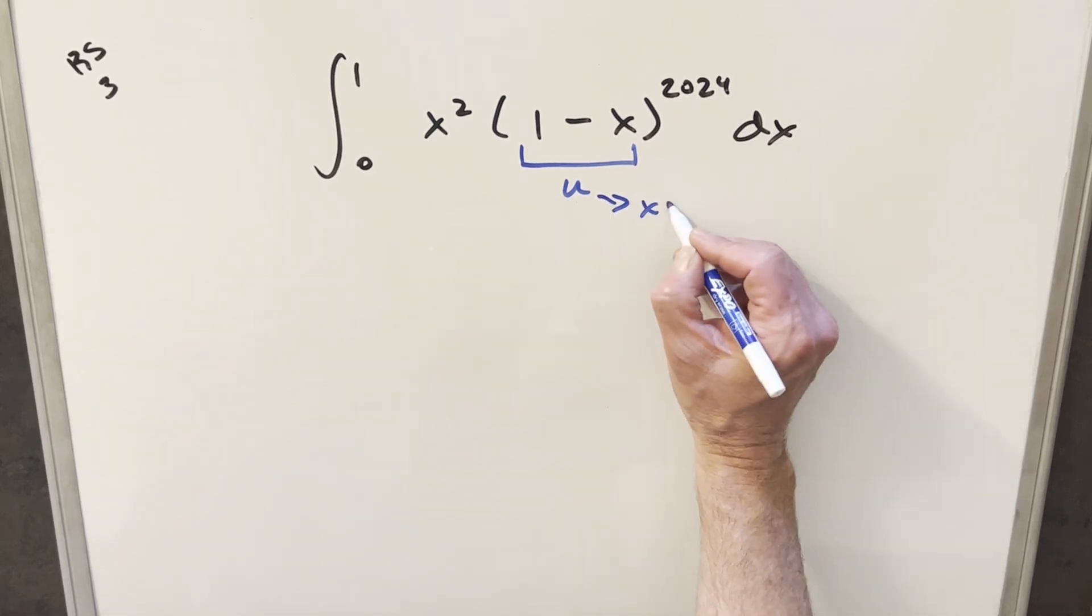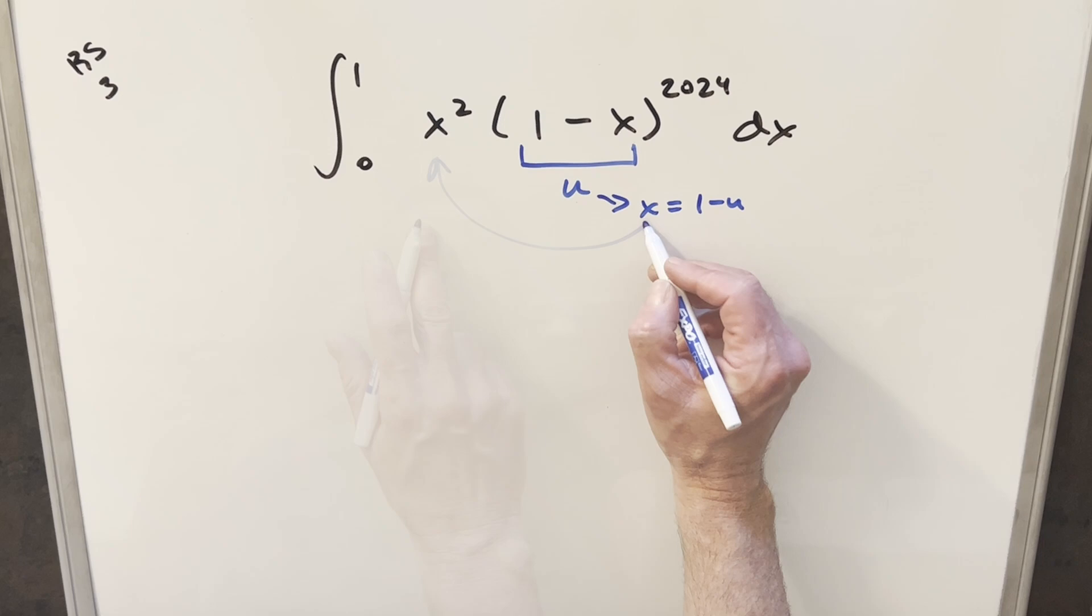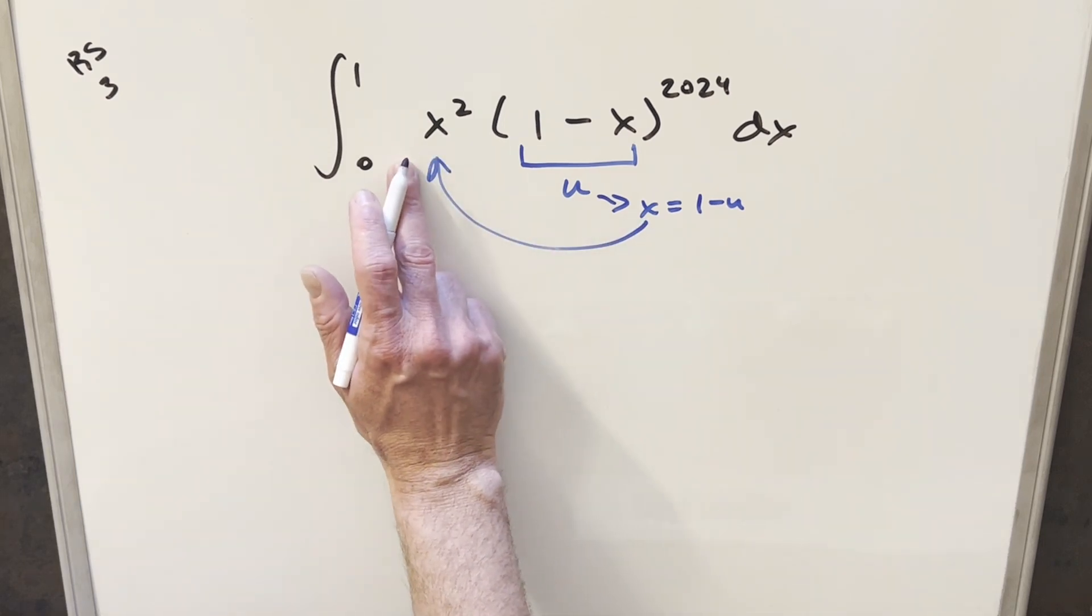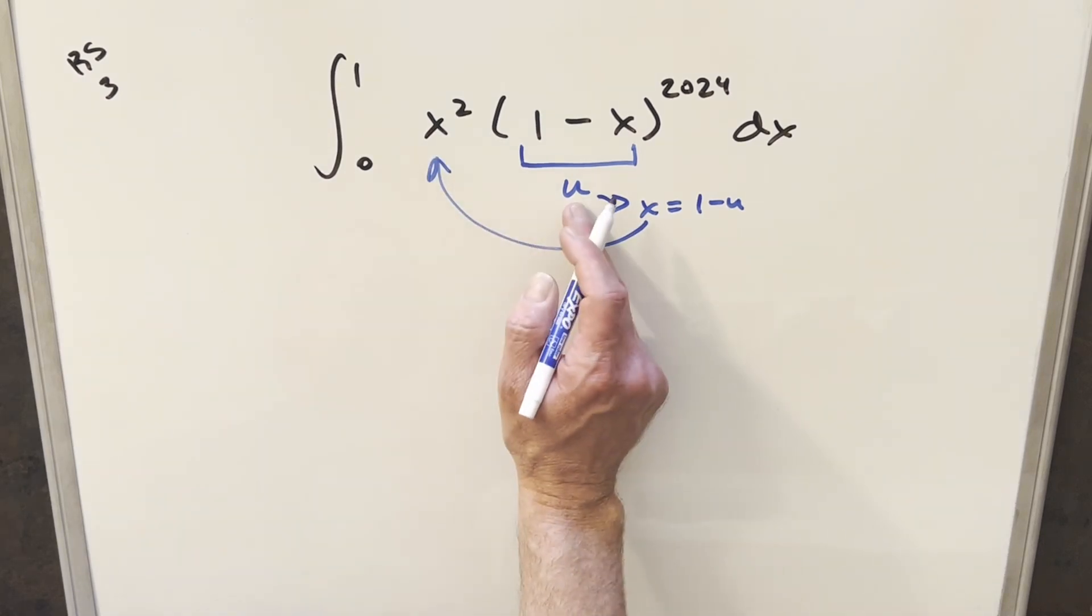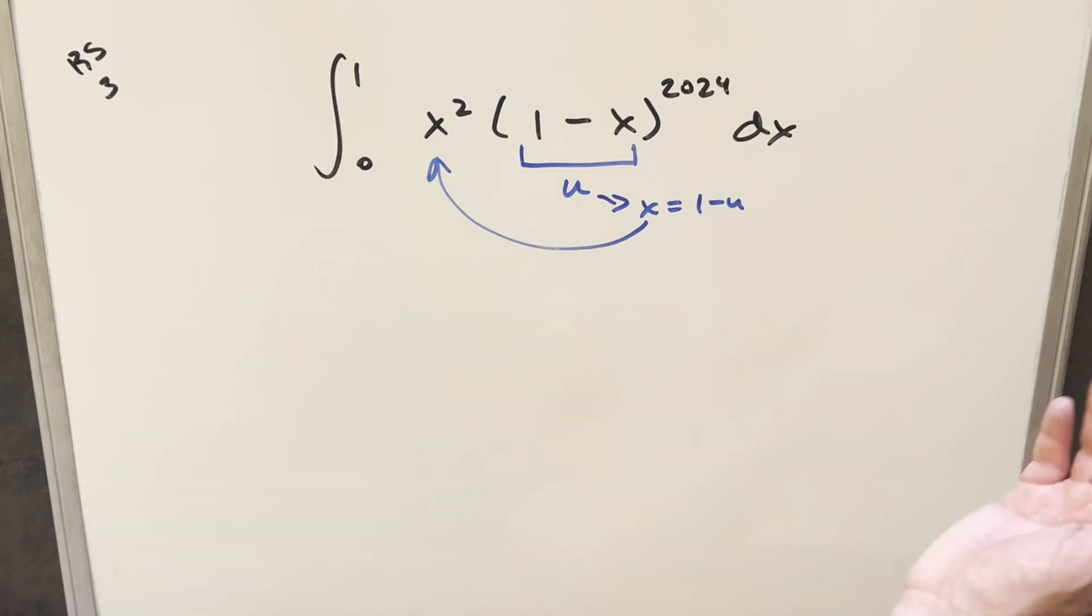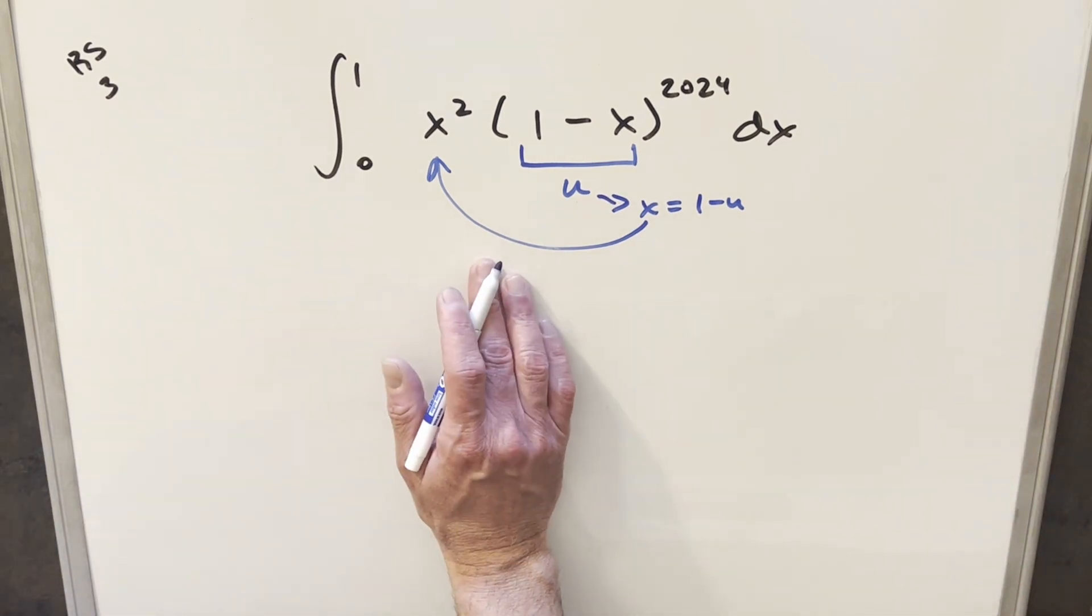When you do this, you can get a value for x, x equals one minus u. When you plug one minus u in there, squaring that is not really a problem. And then u is just u to the 2024. So then multiplying it all, you can just do power rule, and it's not too bad.